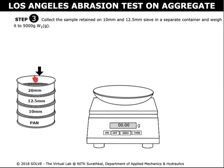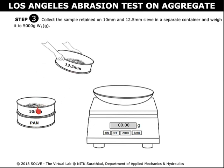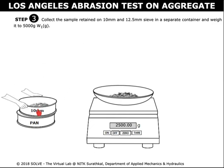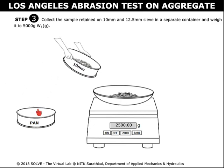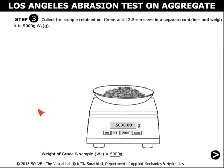Open the lid. Now click on the 12.5 mm and 10 mm sieves to transfer the aggregates collected in them to the container in the weighing machine, and weigh it to 5000 grams — that is W1.